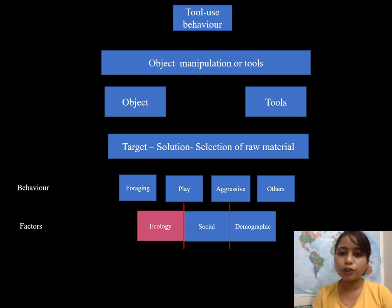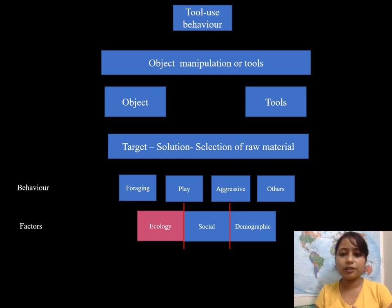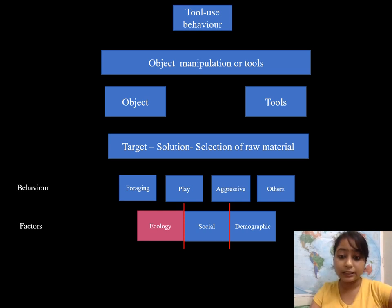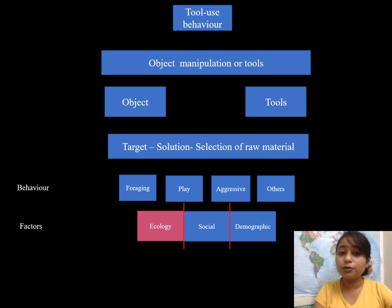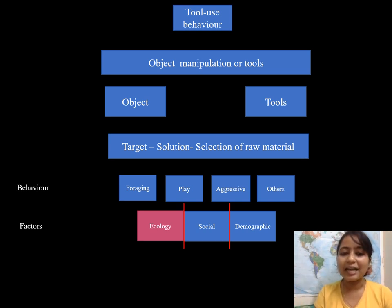In Thailand they forage on oysters and they use stone tools, but in India they forage on fruits and do not use stone tools. How is ecology playing a key role? In Thailand the coastline areas have more rocks, but in India the coastline is devoid of rocks — they do not give the monkeys ample opportunity to forage on oysters. Hence the monkeys in India do not use stone tools.